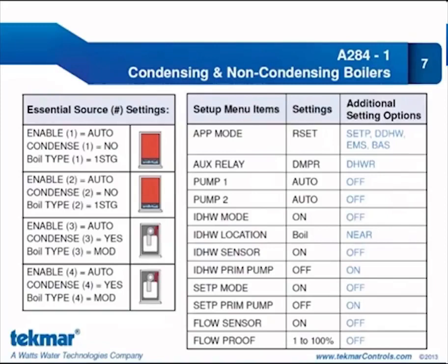If we are doing set point, we turn that mode to on and specify whether the primary pump needs to operate. Our set point load is also piped in parallel, so we turn primary pump off. We do have a flow sensor connected, so we turn flow sensor on. Because we are using that flow sensor to provide proof of flow, we must also select a flow proof percentage — the percentage of full flow that must be achieved to provide proof. If you are using the flow sensor for measurement purposes only and not to provide proof, you would select off.